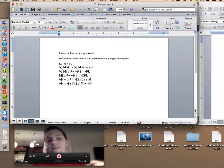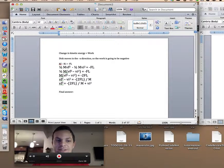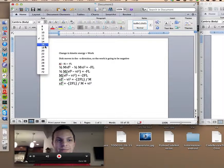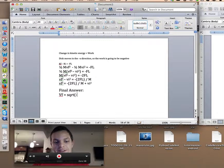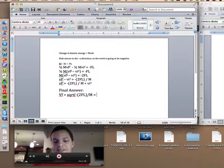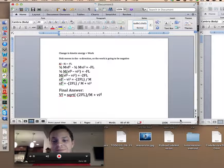And to get your final answer, you're going to simply take the square root of everything. So your final answer leaves us with vf equals the square root of negative 2fl over m plus vi². That is the answer to part 1 of the problem. Now we're going to move on.